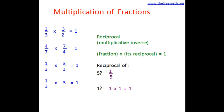Now, what is the reciprocal of 0? Is there any number I can multiply with 0 to get 1? No — because 0 multiplied by any number is 0. You cannot find a number that gives a product of 1. Therefore, 0 has no reciprocal, or we can say it does not have a multiplicative inverse.